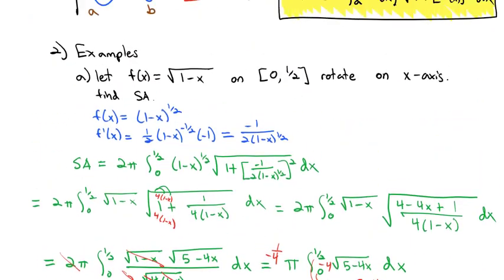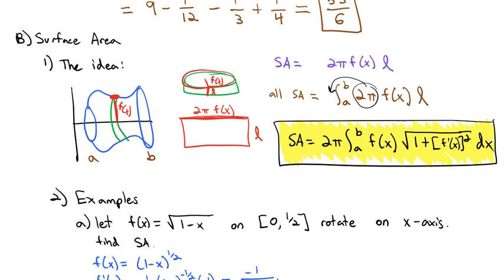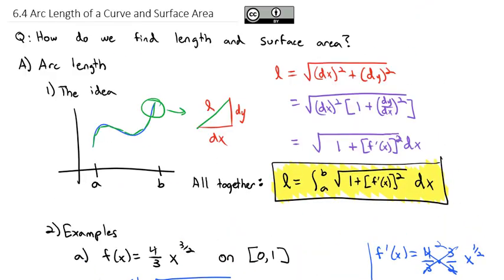What you start to notice with these problems — both surface area and arc length — is that the integration step is quite simple, but we have to work with the algebra inside the formula to get it to a spot where we can take the integral. Take a look at the homework assignment — we're doing the surface area formula and the arc length formula. Practice a few of these and we will discuss them in more detail in class.